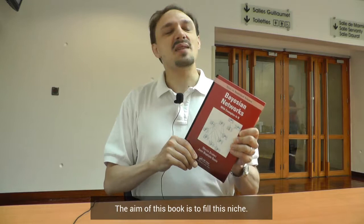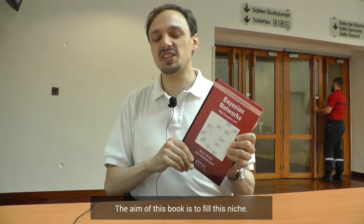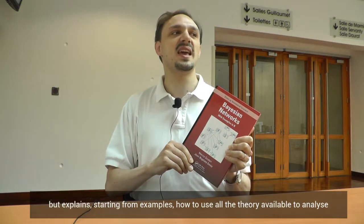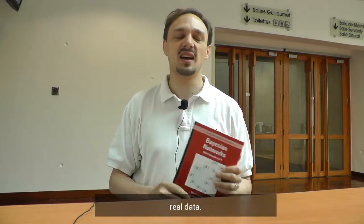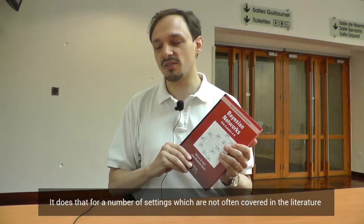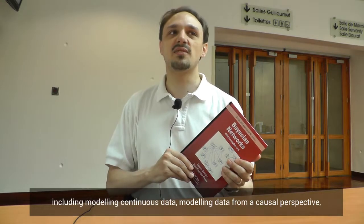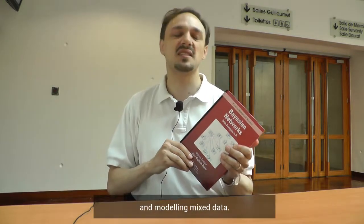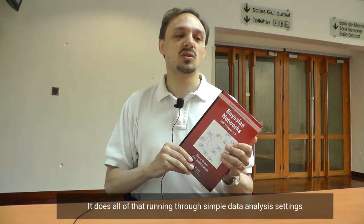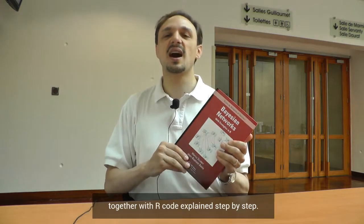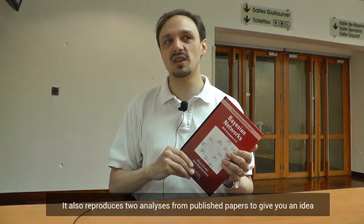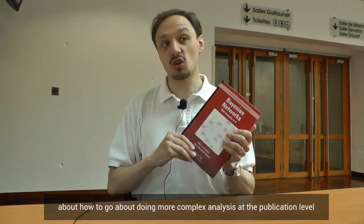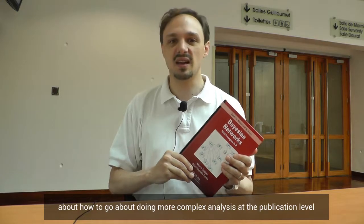The aim of this book is exactly to fill this niche — it doesn't develop new theory, but it explains, starting from examples, how do you use all the theory that is available to analyze real data. It does that for a number of settings not often covered in literature, including modeling continuous data, modeling data from a causal perspective, and modeling mixed data. It does all of that running through simple data analysis settings with R code explained step by step, and it also reproduces analyses from published papers to give you an idea of how to do more complex analysis at the publication level.